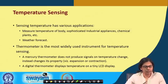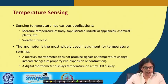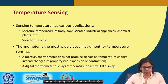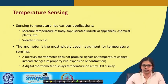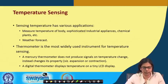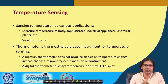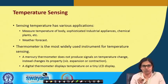If you think of how we measure temperature, a thermometer is the most widely used instrument. A mercury thermometer does not produce signals on temperature change — instead it changes its physical property: it can expand or contract. On the other hand, a digital thermometer displays the temperature on a tiny LCD. We have already seen what an LCD is, so a digital thermometer shows the temperature displayed on a tiny LCD.